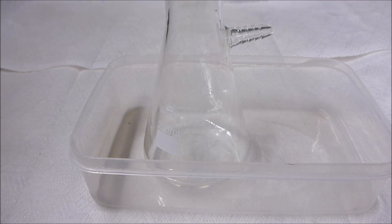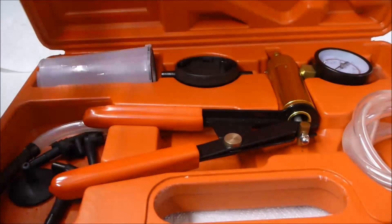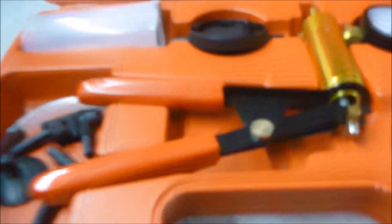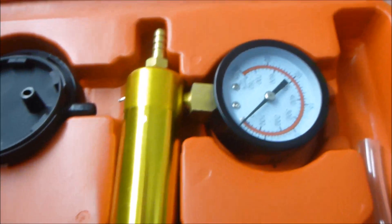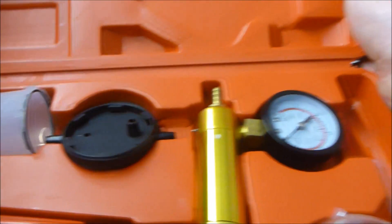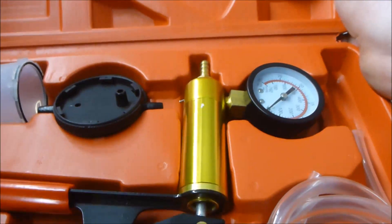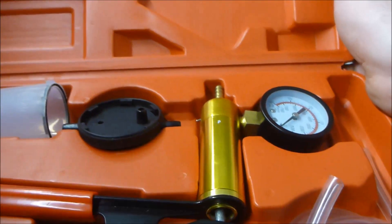The nice thing with the vacuum flask is it's got a little bit of nip for the source of our vacuum, which is going to be an automotive brake bleeding kit. These automotive kits have a manual vacuum pump, and the only bit we're really going to use is the vacuum pump and one of the bits of hose.